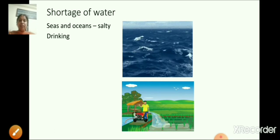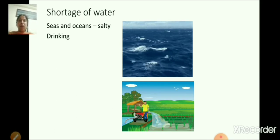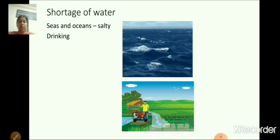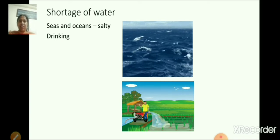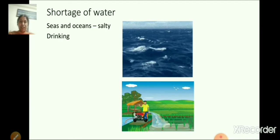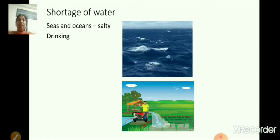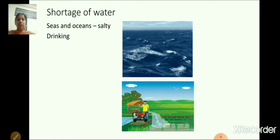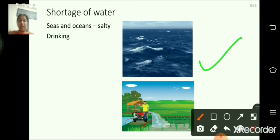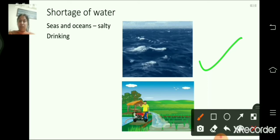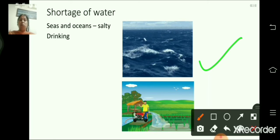We also started with shortage of water. Now we will continue. So children, in spite of being surrounded by water, we still face shortages in many of our towns and villages. This is because the water in seas and oceans is salty. It is unfit for drinking and it cannot be used by farmers for watering their crops.